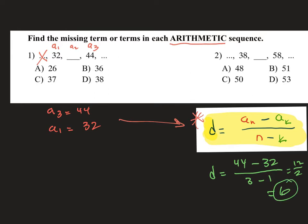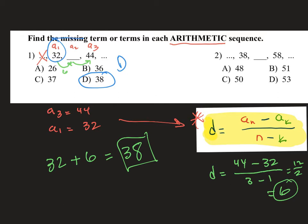What does that mean? It means that each of these terms is separated by 6. So to get from 32 to the blank term, I have to add 6 and then from that one to 44 is another 6. 32 plus 6 is 38. And that is the missing term, which we just located right here, letter D.